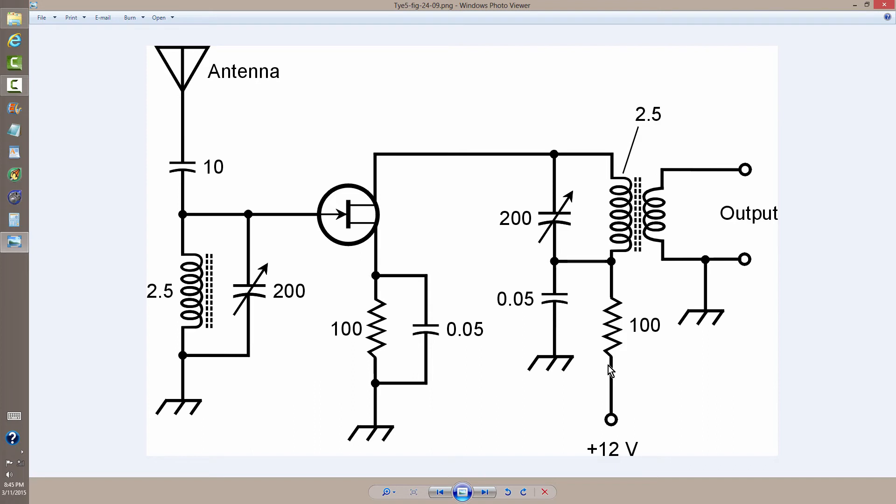The reason it would dip is because a parallel resonance circuit, when it is tuned to resonance at a certain frequency, exhibits a very high impedance, which would minimize the current that is drawn by this amplifier. So all of the signal would go to the output instead of being dissipated as direct current and possibly damaging the active amplification device.